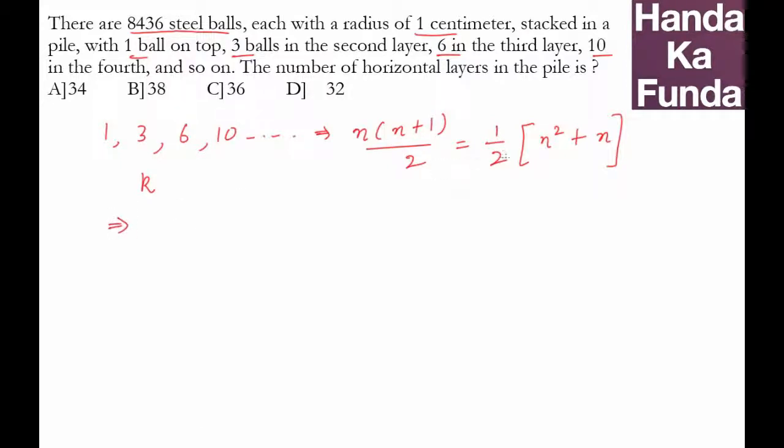To find that, all you need to do is apply summation. If you're applying summation till k, Σn² becomes k(k+1)(2k+1)/6, and Σn becomes k(k+1)/2.